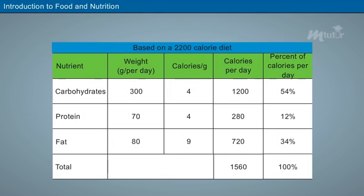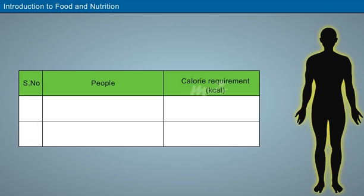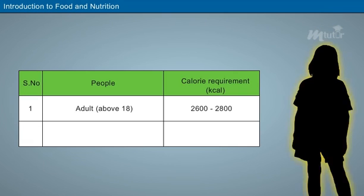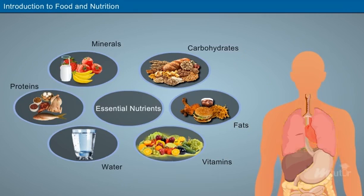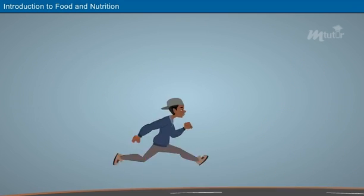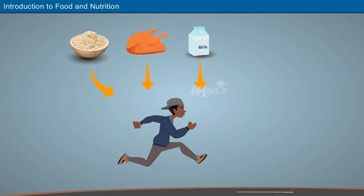Hence, the diet that you consume should include foods that are rich in nutrients. Different people need different amounts of calories every day based on their age, metabolic rate, and medical condition. An average adult requires about 2,600 to 2,800 calories each day, while children require about 1,800 to 2,800 calories. The human body is complicated machinery, subjected to liabilities and anomalies if not maintained properly.